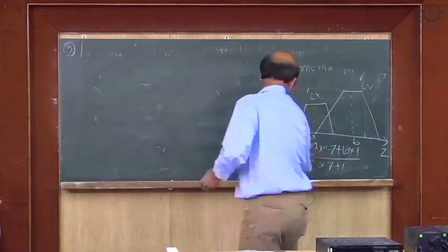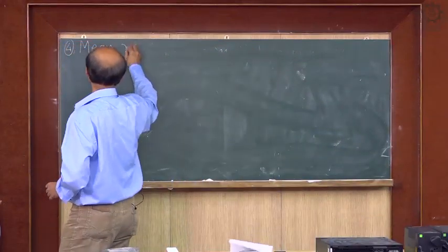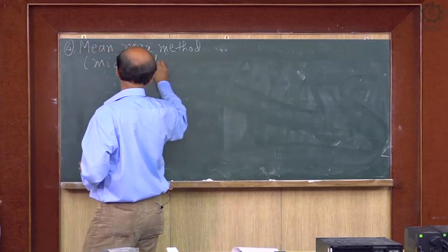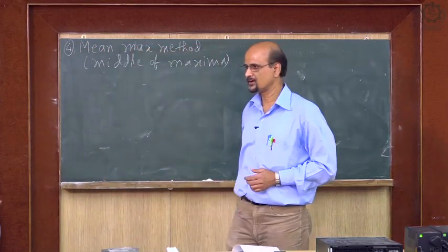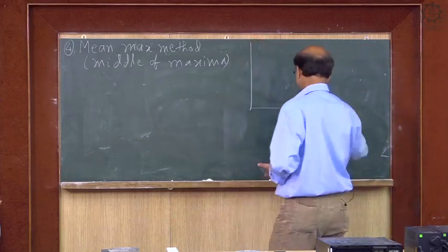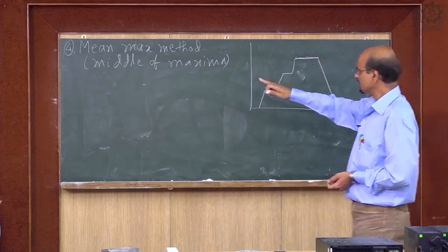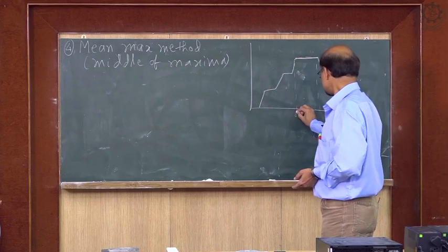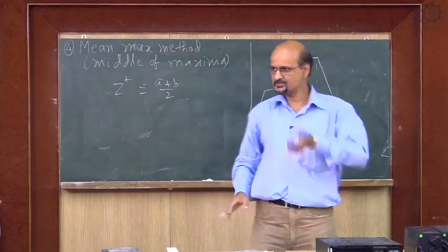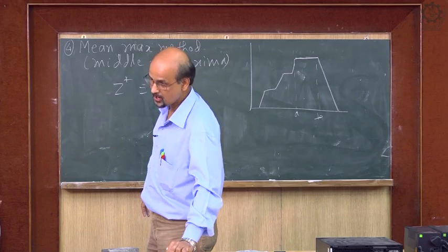The last method is the Mean Max method, also called Middle of Maxima. If I have an output like this where the maximum spans from point 'a' to 'b', then simply z* = (a + b) / 2. These four methods are very simple. There are plenty of other methods to defuzzify the output of a fuzzy system.